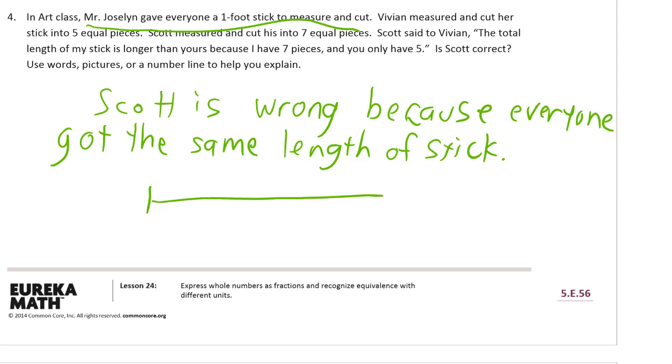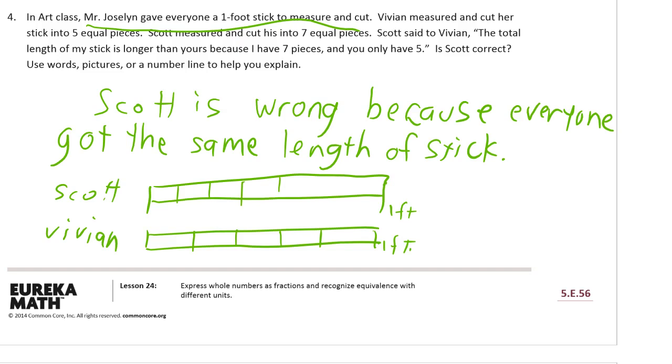So, if you wanted to add some more to that, you could. All right, that's one foot. One foot. Scott's stick and Vivian's stick. Vivian has five fifths. So, that's about like that. And Scott has sevenths. So, he's going to be like that. One, two, three, four, five, six, seven.